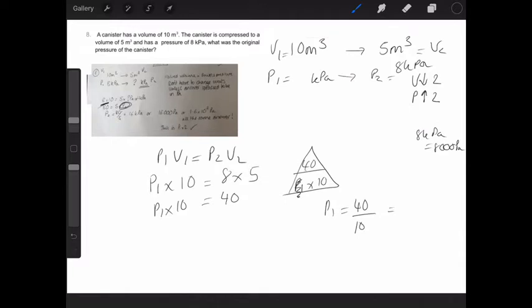So it doesn't matter which way I do it, whether I do it by the balance method or by using a triangle, that what I should be doing at the end is 40 divided by 10, which is four kilopascals, which is half of eight. And at last, I think I got the answer right.